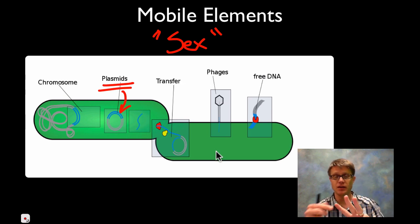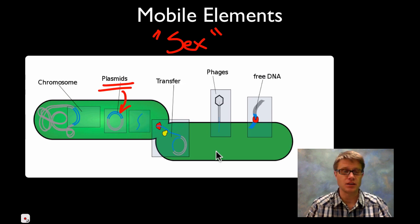There's actually three ways they transfer that. Transformation is picking up something loose in the environment. We have conjugation. It's the closest to actual sex where pili will attach between two and they can share genetic information. And then the last one is going to be transduction. When a virus infects one and then infects another.